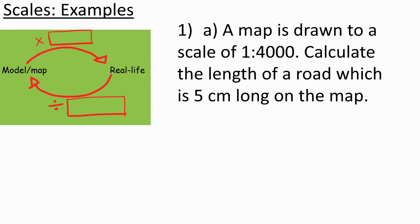Here's an example. A map is drawn to a scale of 1 to 4,000, so what that means is 1 cm on the map represents 4,000 cm in real life. That might seem really impractical — 4,000 cm — which is why we usually change the units once we've worked out what we want to work out.